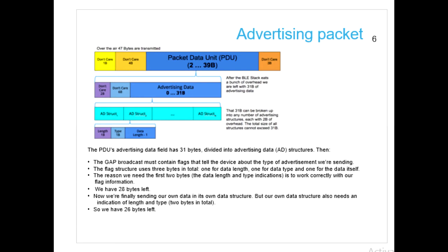The flag tells about capability like whether the device has EDR (enhanced data rate), whether it is connectable or not. The flag structure uses three bytes in total: one for data length, one for data type, and one for the data itself. This is common for all BLE devices. After the flags and headers, you get around 26 bytes of pure data which you can send as per your information.